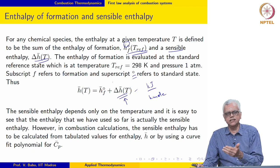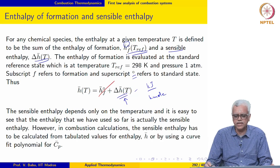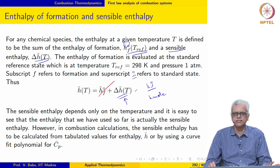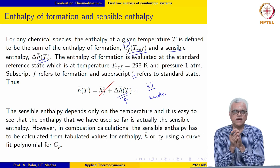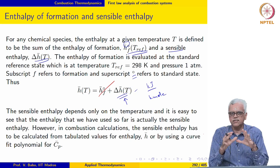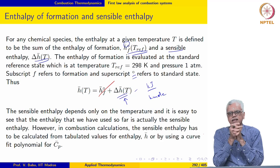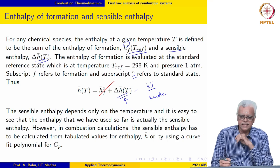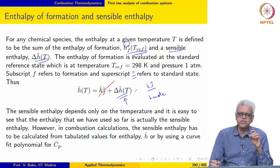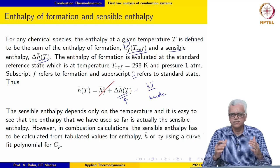Whatever we had called enthalpy in the steady flow energy equation is still enthalpy. The only difference is the expression used to calculate it. Previously, enthalpy equaled the sensible enthalpy; now, enthalpy equals the enthalpy of formation plus sensible enthalpy. Only the expression for calculating enthalpy has changed, not the terms that appear in the energy equation. The definition H equal to U plus PV still holds — nothing has changed there.